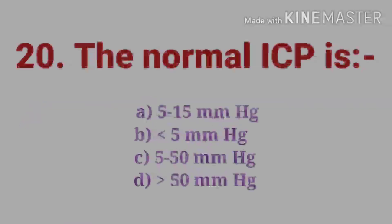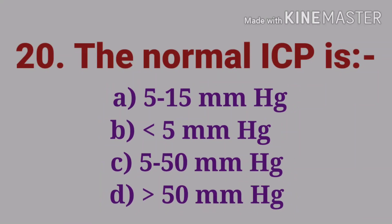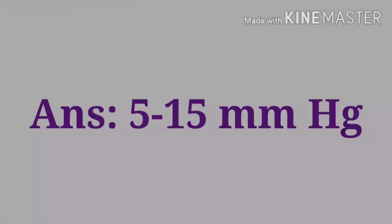The twentieth question: the normal ICP — options are 5 to 15 mmHg, less than 5 mmHg, 5 to 50 mmHg, or more than 50 mmHg. The answer is 5 to 15 mmHg.